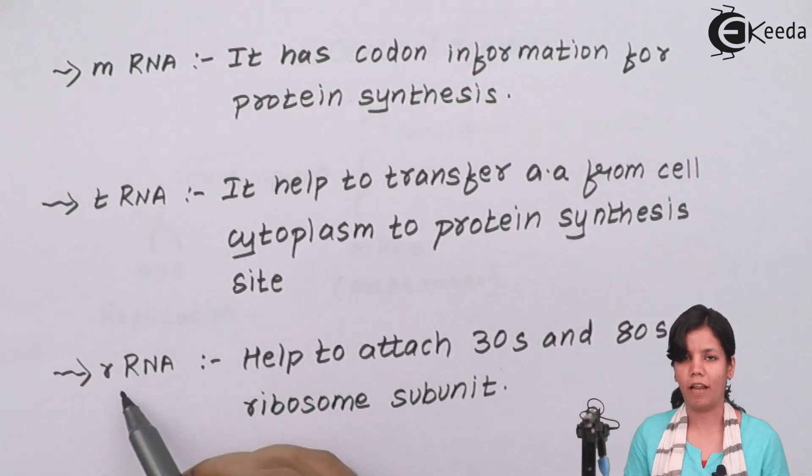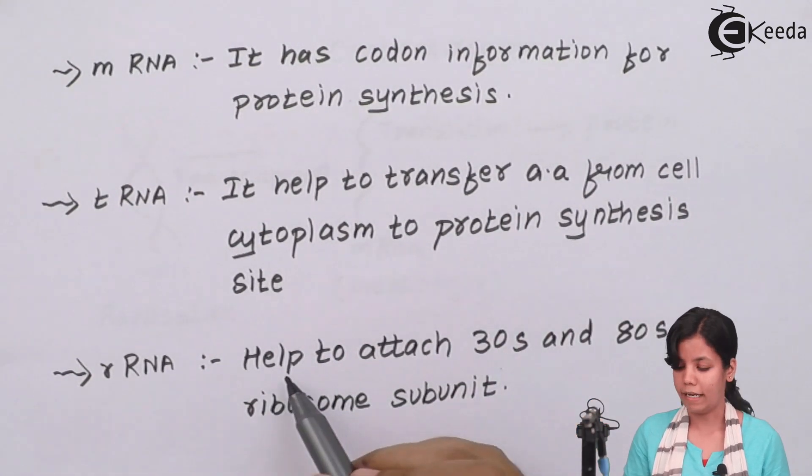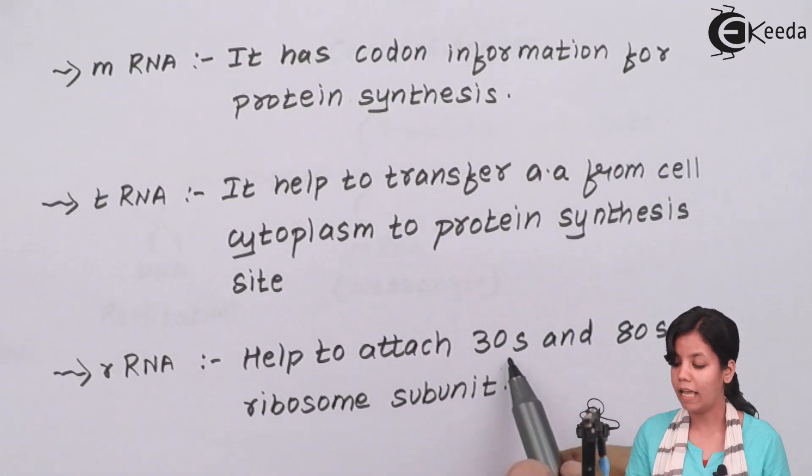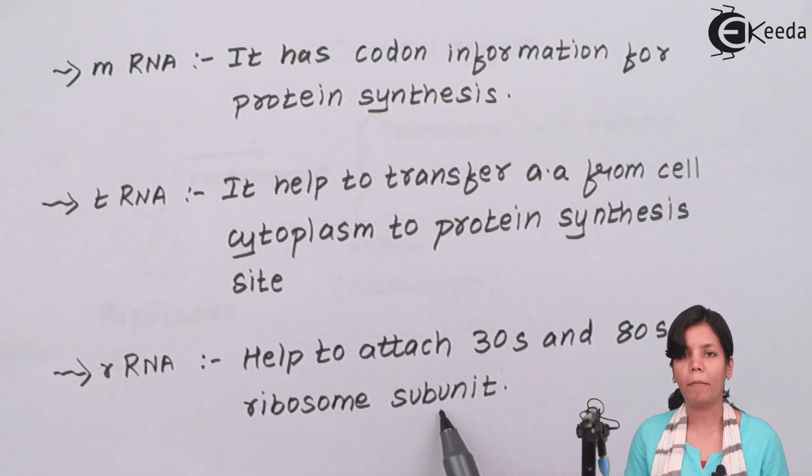rRNA, that is ribosomal RNA. Now ribosomal RNA helps to attach 30S and 80S ribosomal subunits to mRNA so that the process of translation or protein synthesis can actually start.